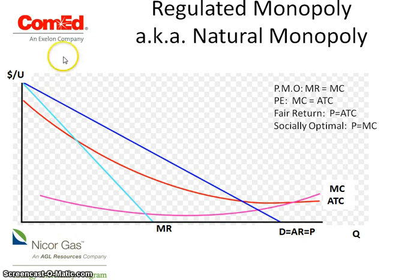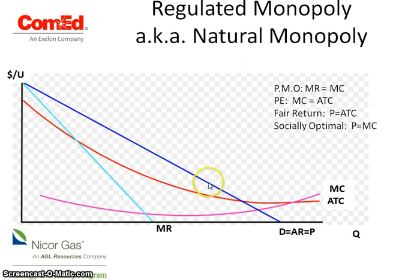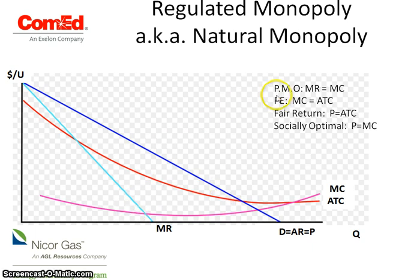Real-world examples include ComEd and NICOR. These are ones where they have very high startup costs, or it could be related to plants — another reason why you have this ATC at its minimum way out here. When looking at this graph, it's still the same: demand equals average revenue equals price, and you've got your marginal revenue curve that's less than your demand curve.